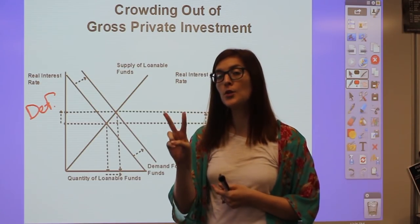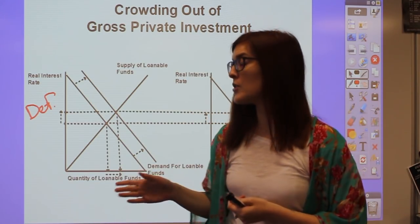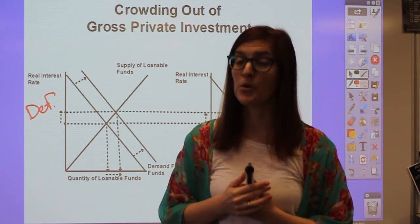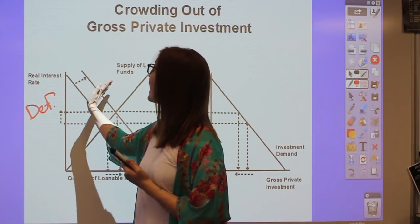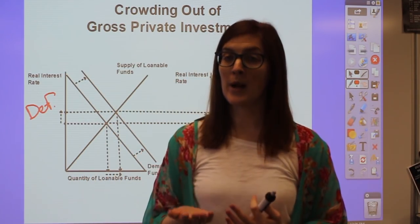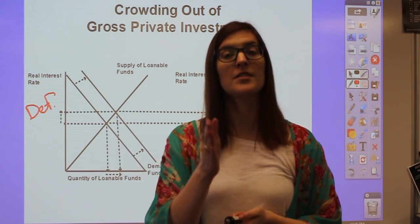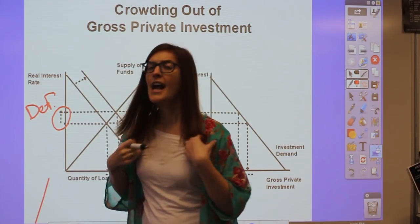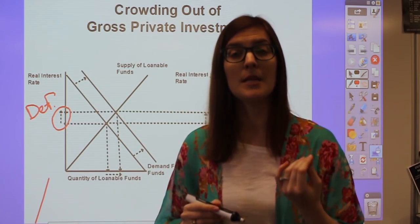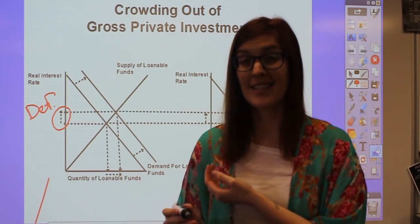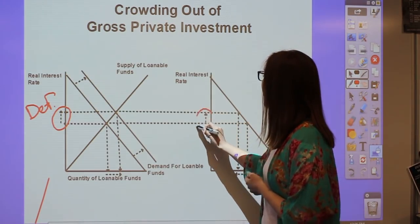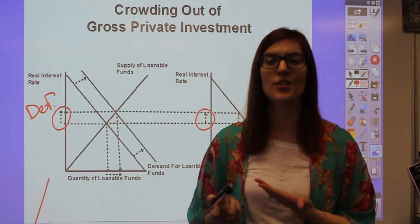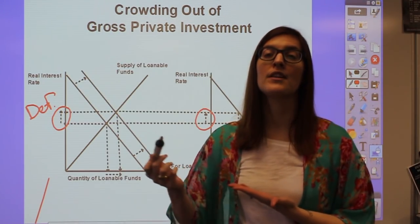With a deficit, the government can either borrow more—increasing demand for loanable funds—or save less, decreasing supply of loanable funds. Either way, real interest rates are driven up. Higher real interest rates affect gross private investment—the I of GDP—causing it to fall. That's a problem because we're trying to grow GDP out of a recession. Why would I fall when the whole point is to grow GDP?